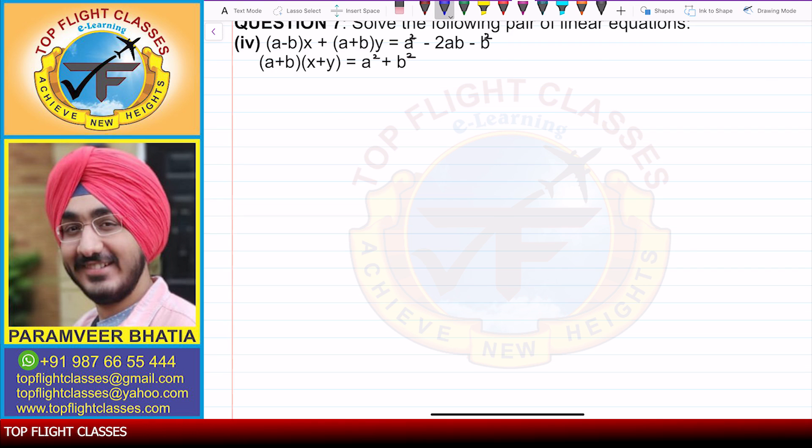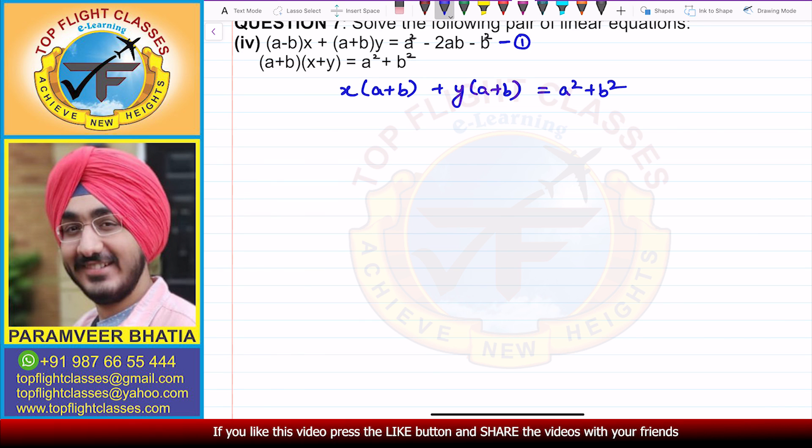Let this be the first equation. Now when we open the second equation, we get x(a+b) + y(a+b) = a² + b². This becomes the second equation. Now in these two, you can see this is y times (a+b), and the first equation also has (a+b)y.